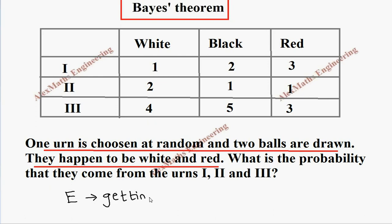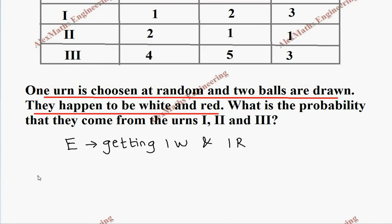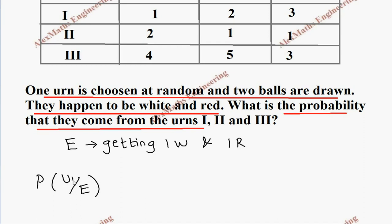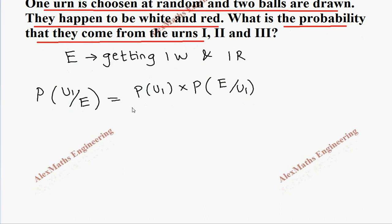Let's name event E as getting one white and one red. Since E has already happened, it will go in the denominator. The question asks for the probability that the balls came from urn 1, 2, and 3. For urn 1, we write the Bayes formula: the numerator is P(E|U1), and the denominator is the total probability.